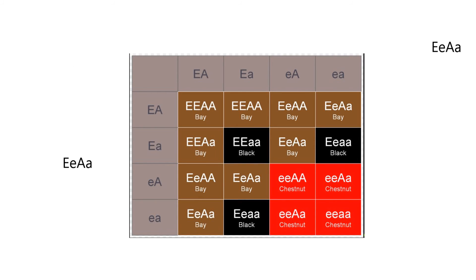Here's a Punnett square showing the dam on the left and the sire on top, giving a four-by-four square. Briefly: you can get a black horse if there's no A to send the black to the points; with at least one large E the black gets extended to the points and that's called a bay or black bay; and with no large E anywhere, it's a chestnut. It's a beautiful Punnett square where both parents are heterozygous, showing possible offspring genotypes and phenotypes.